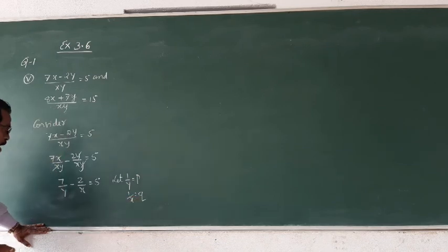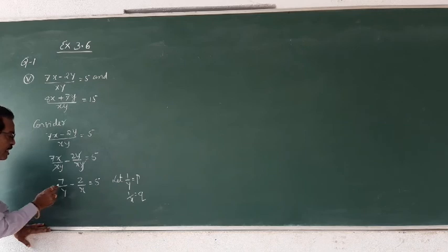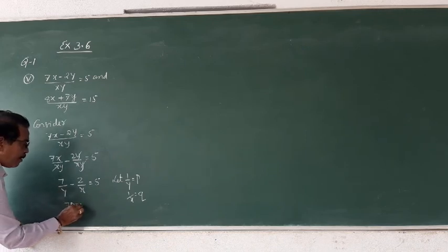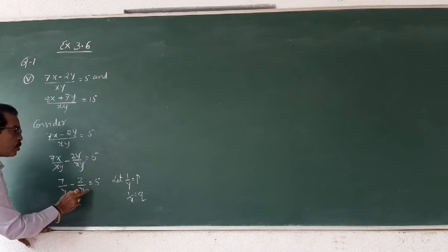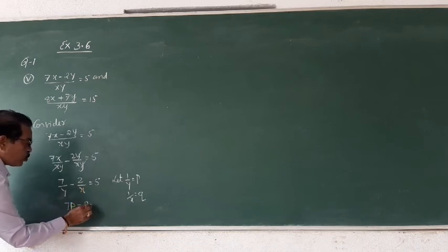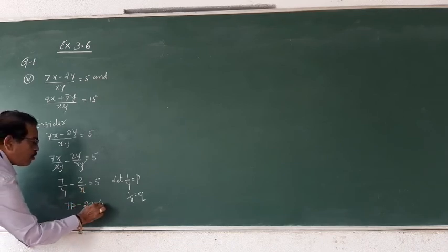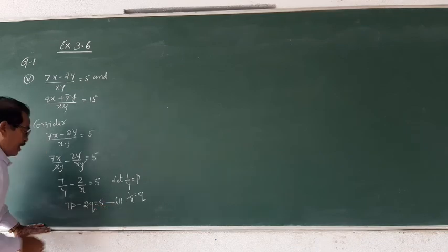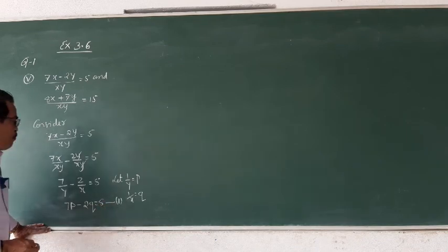Now what will this equation become? 7 times 1 by y, that is 7p, minus 2 times 1 by x, that is 2q, equals to 5. This is the first equation.